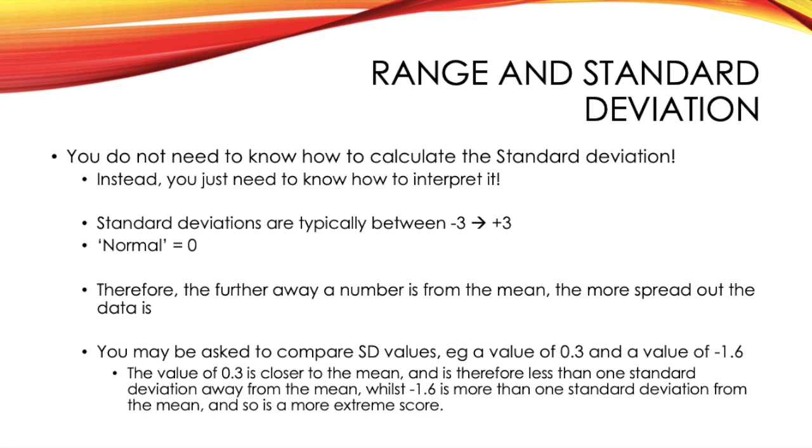Therefore, the further away a number is from the mean, the more spread out the data is, and the more the value is extreme. In a question, you may be asked to compare standard deviation values. For example, a value of 0.3 and a value of minus 1.6. So, the kind of thing you could say is that the value of 0.3 is closer to the mean, and is less than one standard deviation away from the mean. Whilst minus 1.6 is more than one standard deviation from the mean, and so is a more extreme score.